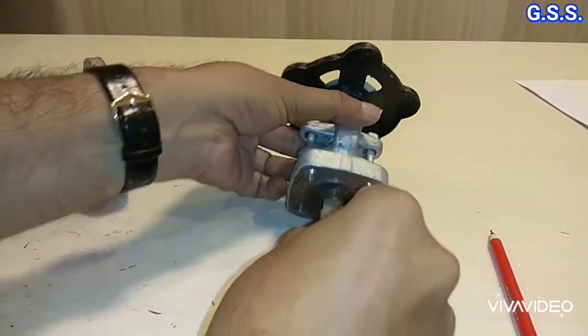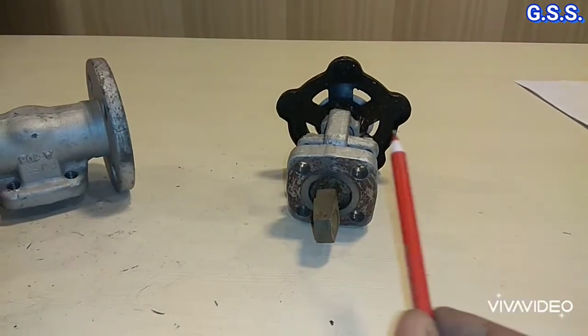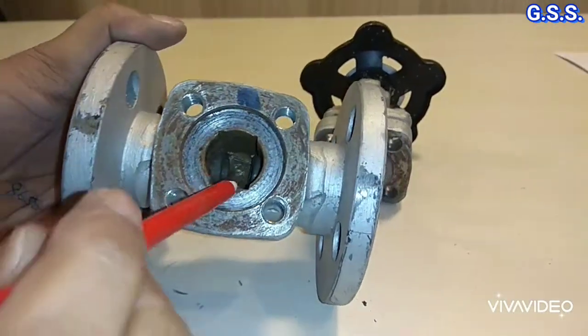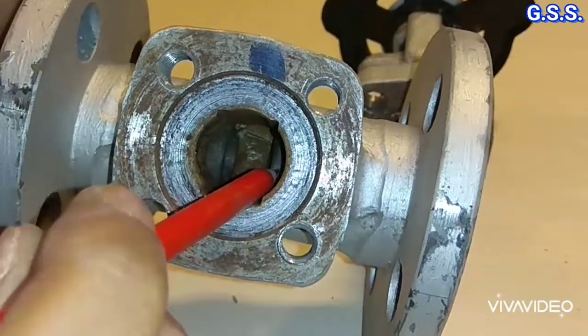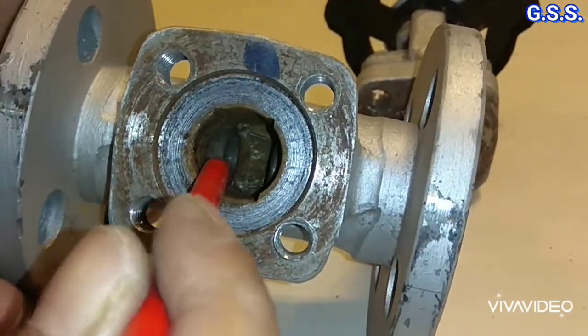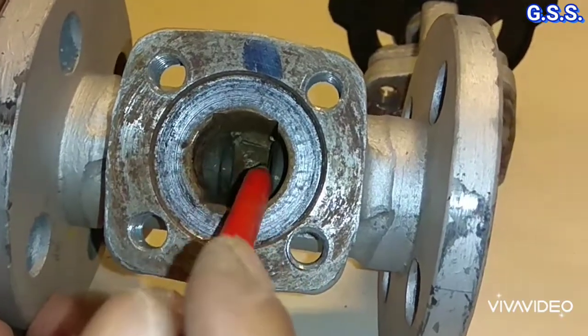This wedge sits over tapered body seat rings. This side has one seat ring and this side has one seat ring. These seat rings are also tapered.